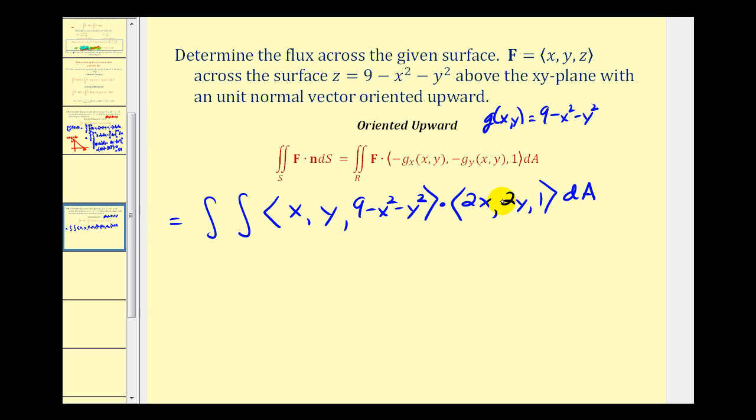Let's go ahead and find this dot product before we determine our variables of integration and our limits of integration. So we'll have two x squared plus two y squared, and we'll have plus the quantity nine minus x squared minus y squared. So we're going to have x squared plus y squared plus nine.